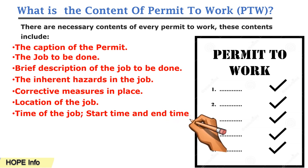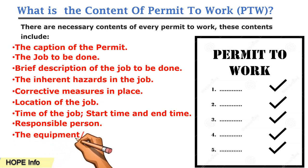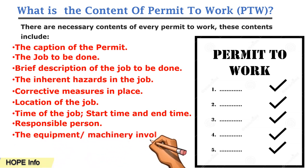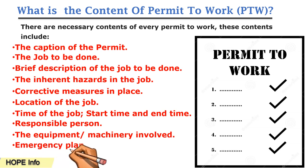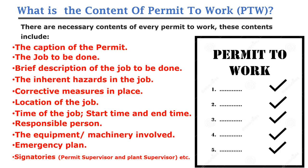Also included are: the time of the job — start time and end time must be mentioned — the responsible persons, specifying which persons take responsibility for that duty, the equipment or machinery involved and which types of equipment will be used, emergency plans, and finally the signature of the permit supervisor and plant supervisor to sign and close the permit.